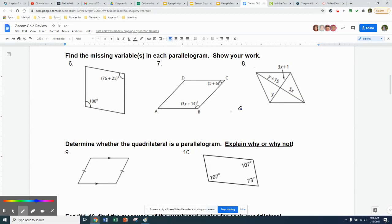Diagonals that bisect each other. So bisect means two equal parts. So those two would be congruent to each other, and then these two would be congruent to each other right there and right there.